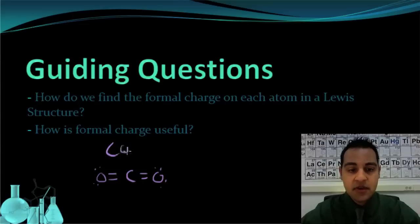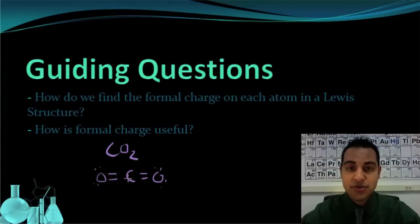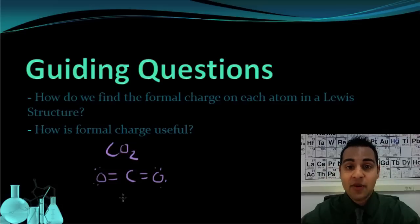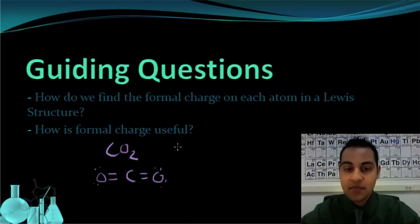This molecule here is carbon dioxide. There's one carbon bonded to two oxygens. This Lewis structure tells us there are two double bonds, one to each oxygen. But how do we know that this is the correct Lewis structure — the most accurate representation of where those electrons are for a molecule of carbon dioxide? Why isn't it something like this?